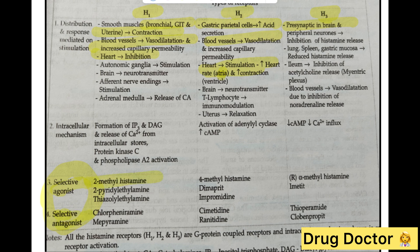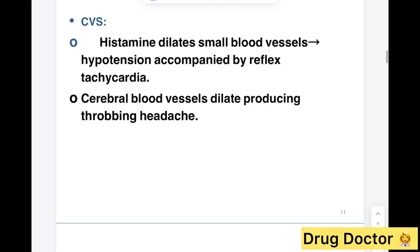For selective agonists: H1 has 2-methylhistamine, H2 has 4-methylhistamine, and H3 has alpha-methylhistamine. A way to remember: H1 has 2, H2 has 4, and H3 has no numeral but has an alpha-methyl group. For selective antagonists: H1 has chlorphenamine and mepyramine; H2 has cimetidine and ranitidine; H3 has thioperamide and clobenpropit.